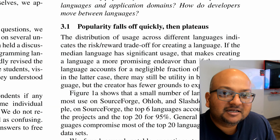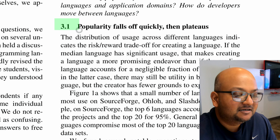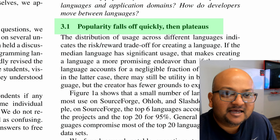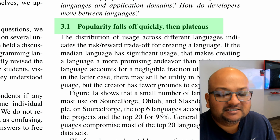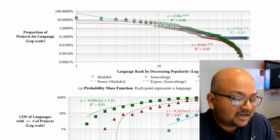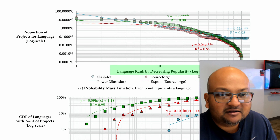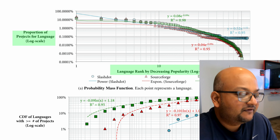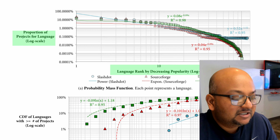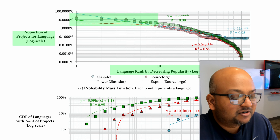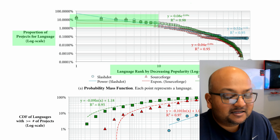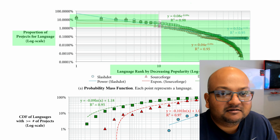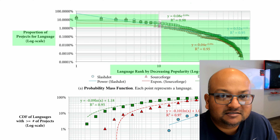When looking at popularity, the finding is not that surprising: it falls off quickly and then there's a long tail of a large number of languages that are very niche. If you look at a graph that plots the popularity rank of a language against what fraction of projects they appear in, you will see that a small number — about 10 — appear in a substantial fraction of projects. Note that both axes are on a log scale, and then you have a large number of languages in the tail which appear in tiny fractions of projects.